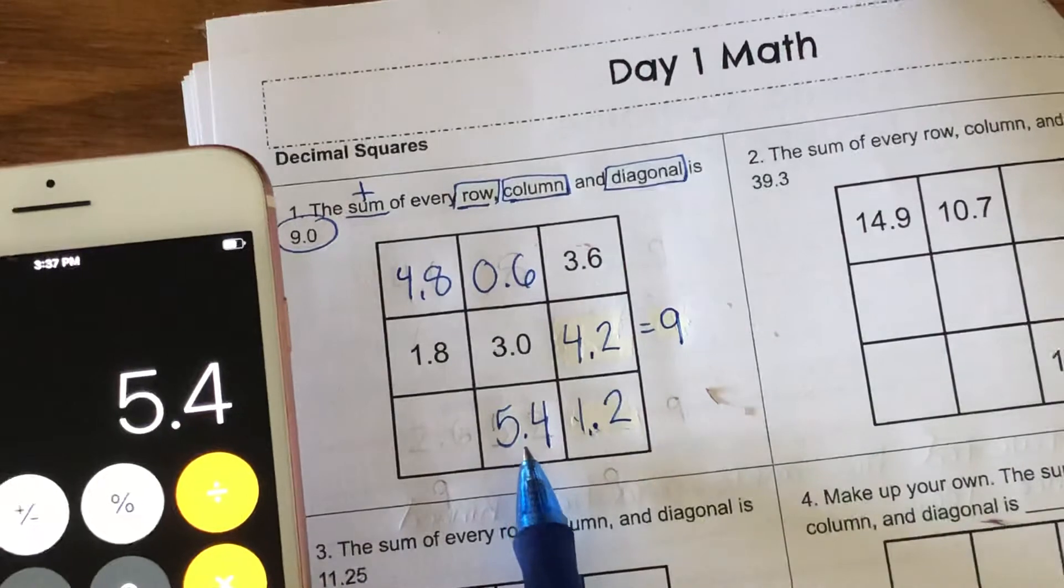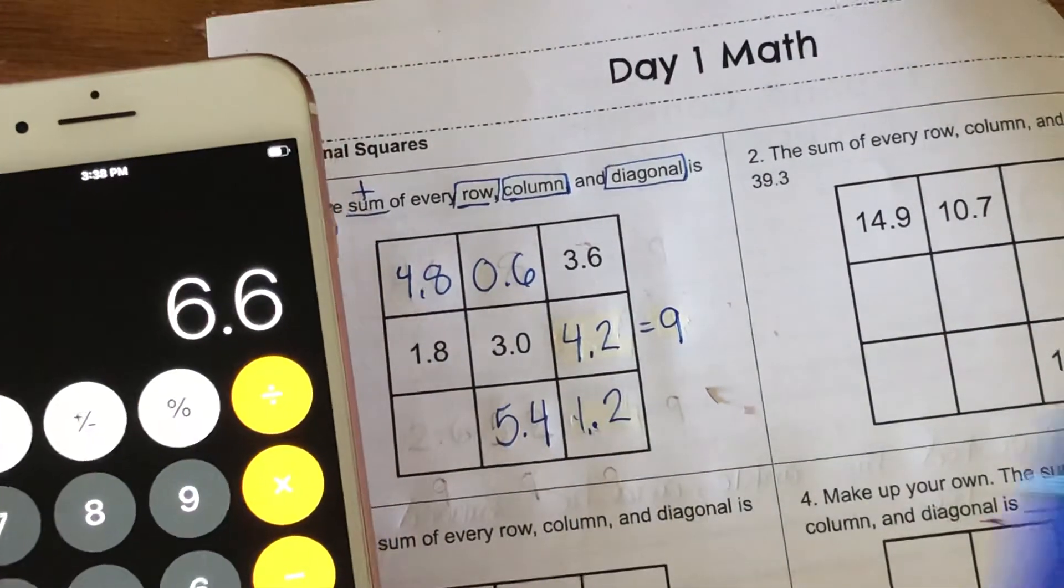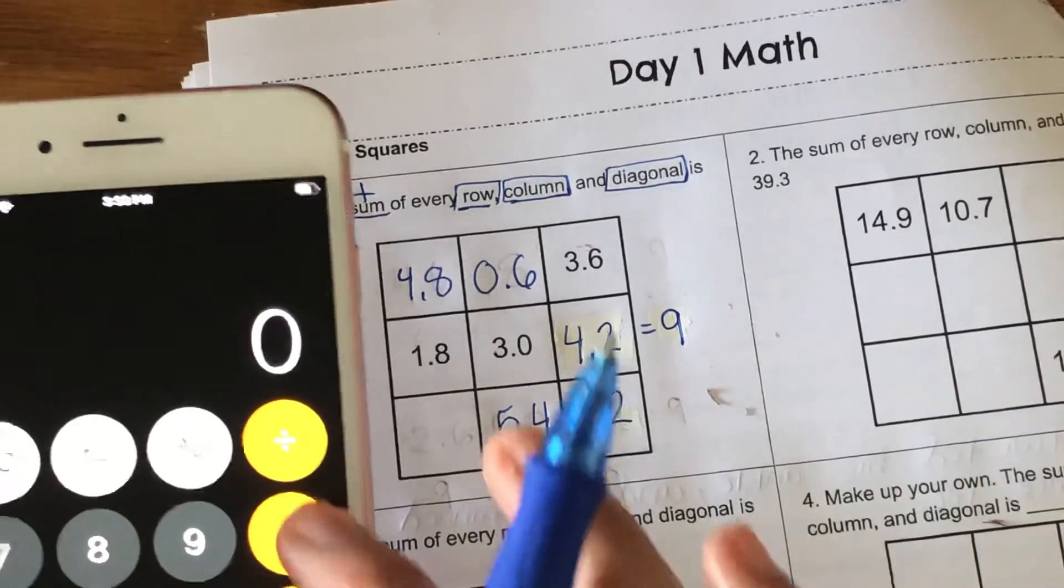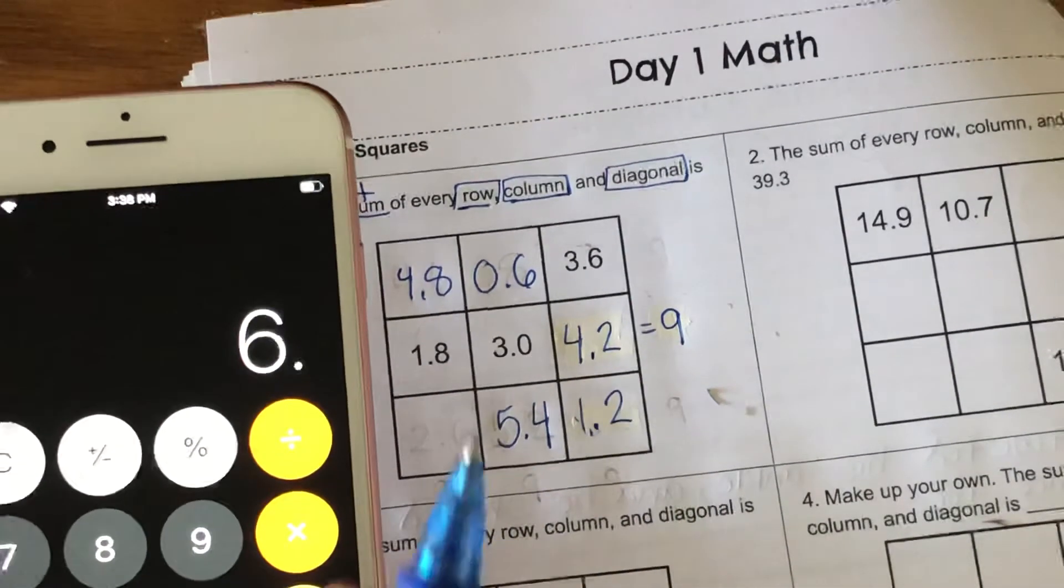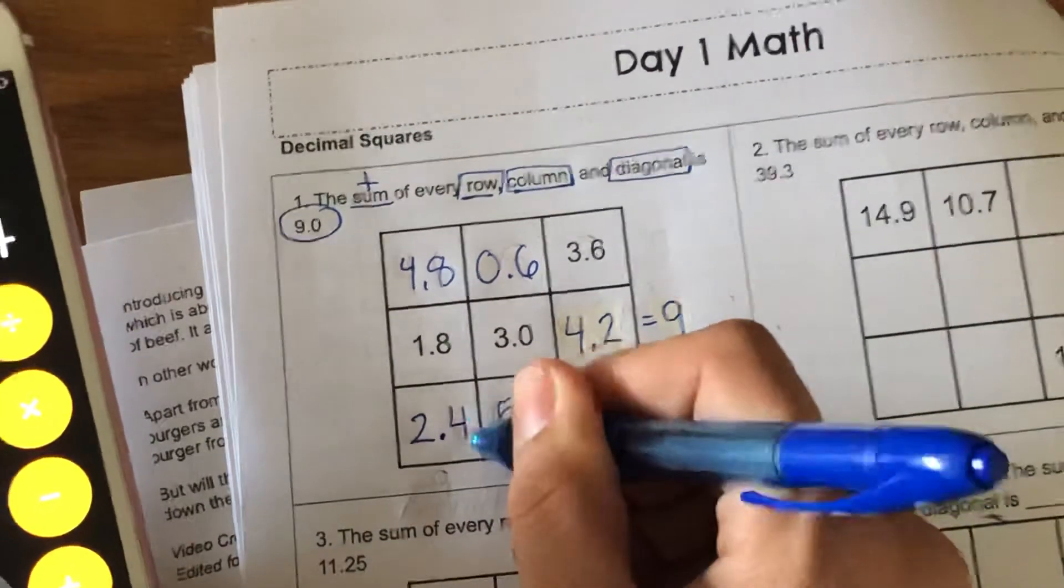That leaves me with my last box. Now I have to add these two together to get the missing number that I take away from 9. So 5.4 plus 1.2 equals 6.6. Taking away 6.6 from 9, I get 2.4.